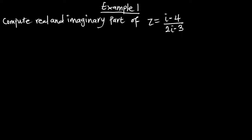We have to find the real and the imaginary parts of the expression given. The solution is quite simple. Given that we have i minus 4 on 2i minus 3. In order to simplify this expression, we must multiply it by its conjugate.